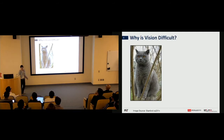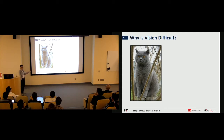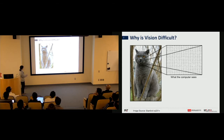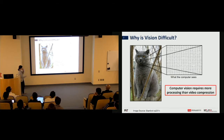Why is vision difficult? If I give you an image, you can immediately tell me it's a cat. But if you're a computer, you see just a bunch of numbers — and that's a much more difficult task. With those numbers you can easily apply compression algorithms, but understanding is very challenging. Computer vision requires much more processing than video compression because you typically have to project the data into a higher-dimensional space to analyze the image.